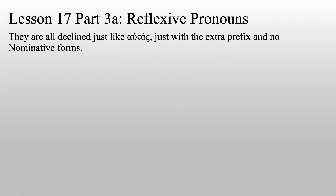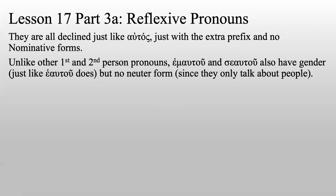They are all declined just like autos, just with the extra prefix and no nominative forms. Unlike other first and second person pronouns, emautu and seau tu also have gender, which heau tu also does — though we're used to seeing that in third person. But they also don't have neuter forms since they're only ever used to talk about people. You would never use these to talk about an object, and an object isn't going to refer back to itself, so we only need masculine and feminine forms.